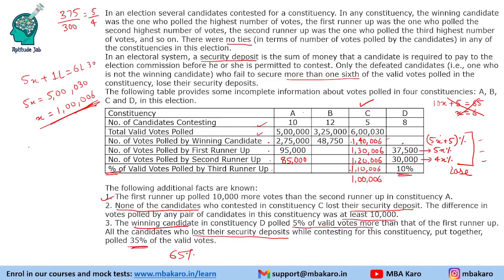So the top three retain their security deposits. Adding their percentages: 14x plus 5 equals 65. Solving, 14x equals 60, so x equals 30 by 7. Now we can find the total number of votes. Since 4x percent equals 30,000 votes, that is 120 by 7 percent equals 30,000.